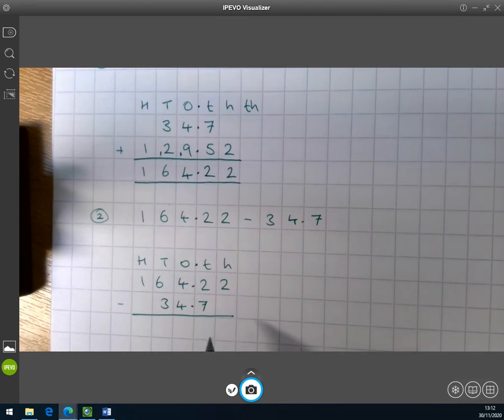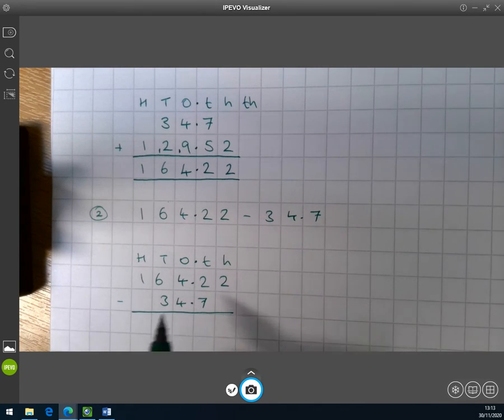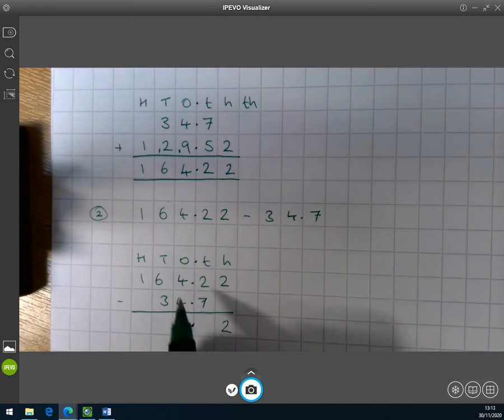So the additional thing with subtraction is we might be exchanging. Now here we've got 2 take away, and there's nothing here. So 2 take away nothing is 2. But here we've got 2 take away 7, which we can't do in column subtraction.